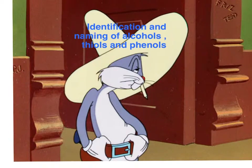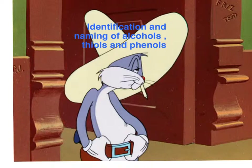In this seventh video of the organic chemistry series, we will begin identifying and naming the various functional groups that were mentioned in video six. This particular video will concentrate on the identification and naming of alcohols, thiols, and phenols. When we look at the structure of alcohols, thiols, and phenols, they will consist of a hydrocarbon that's going to singly bond to an oxygen or to a sulfur compound.